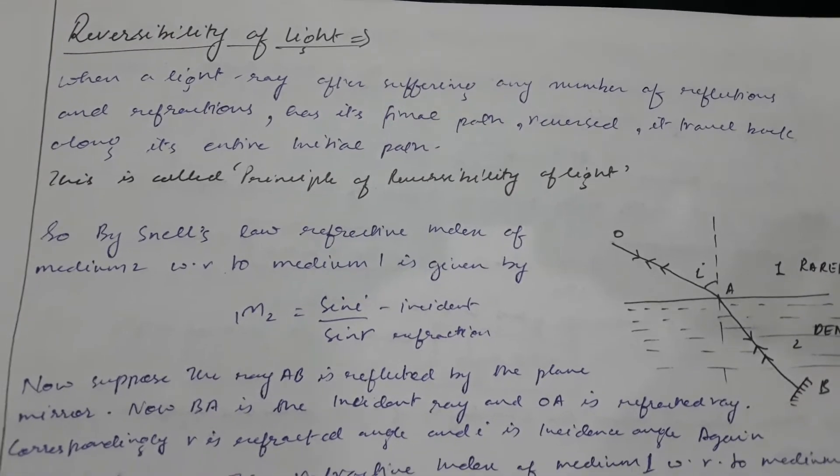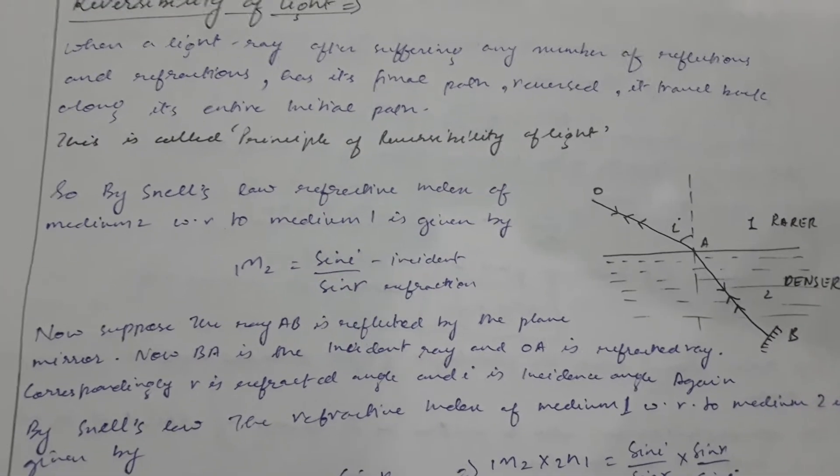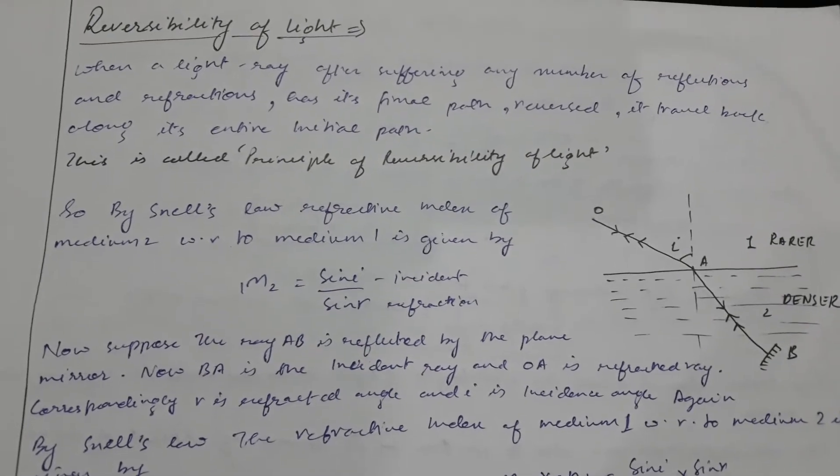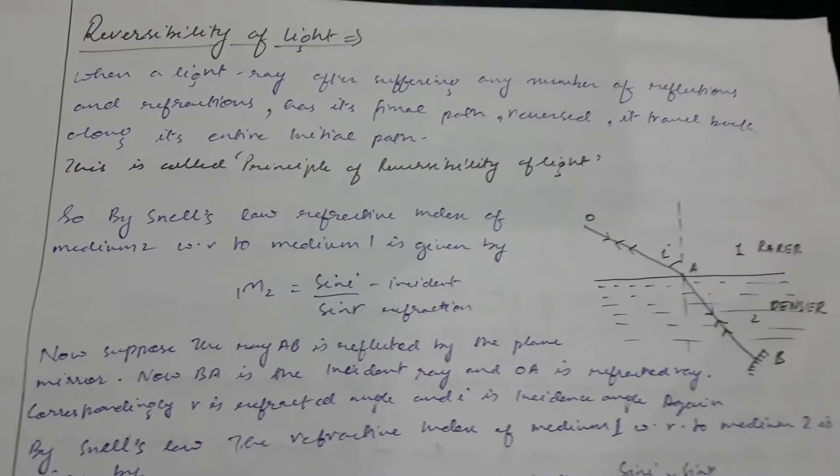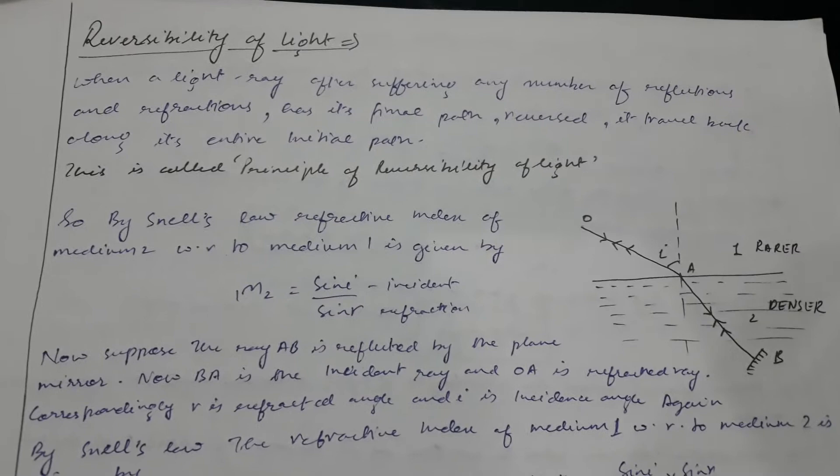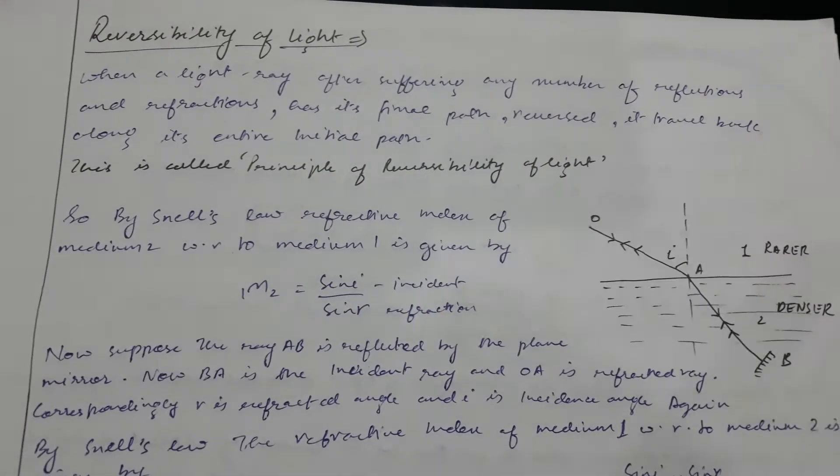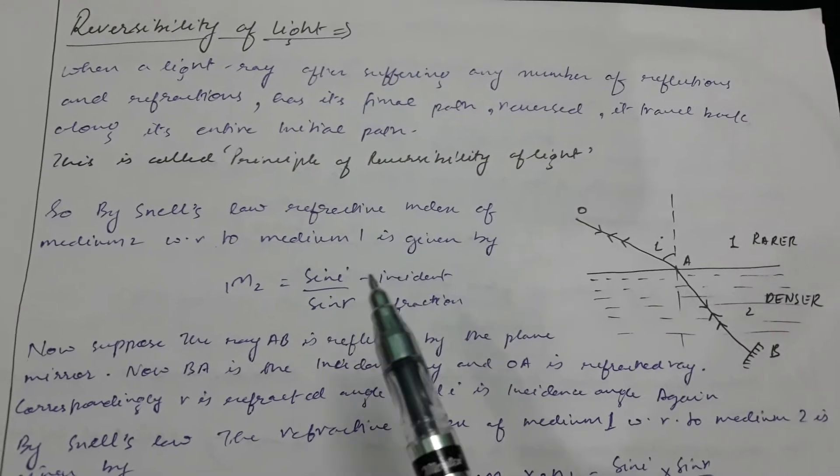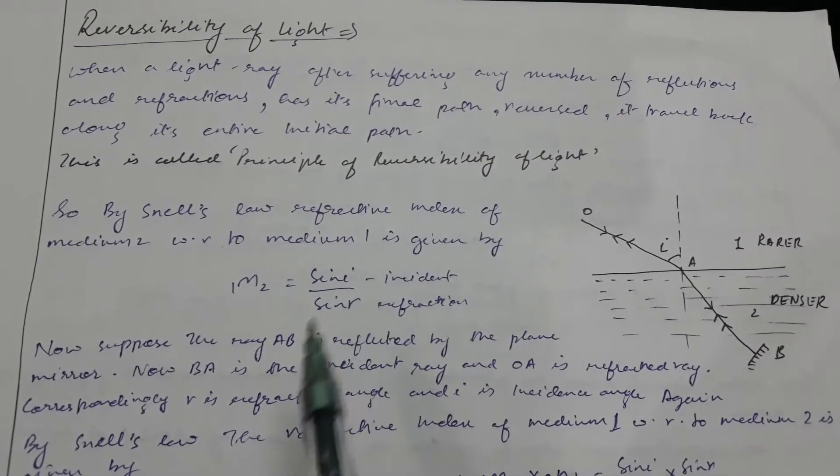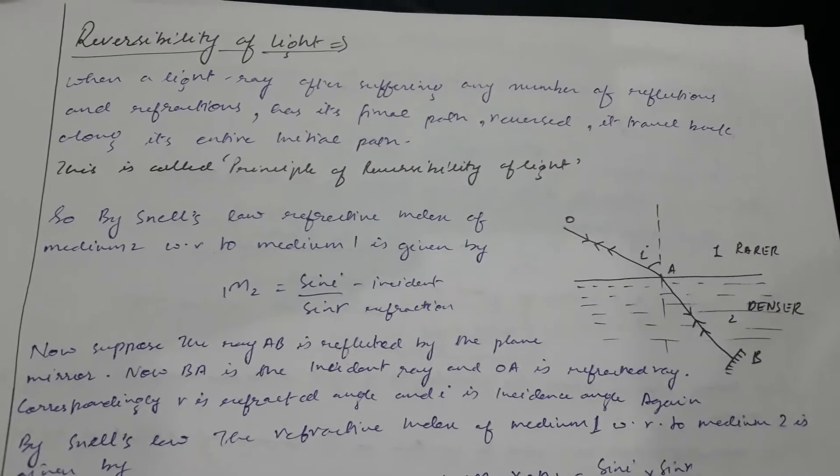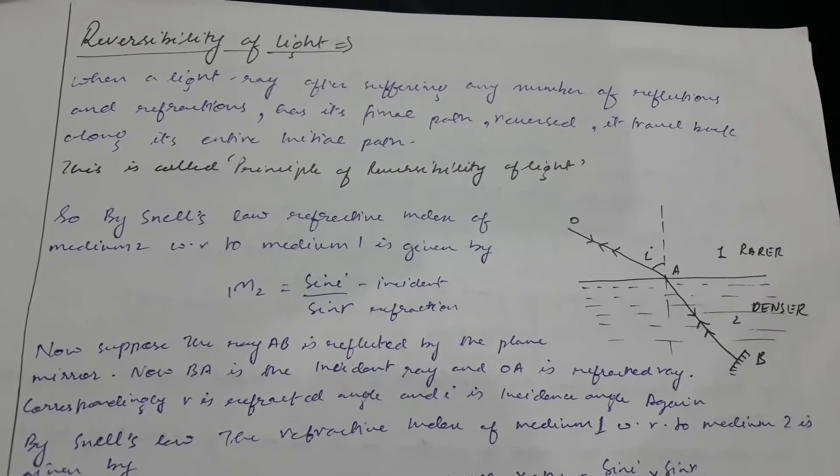By Snell's law, the refractive index of medium 2 with respect to 1, means the refractive index of denser medium with respect to rarer medium, is equal to sine i by sine r, which is constant for any two particular media.